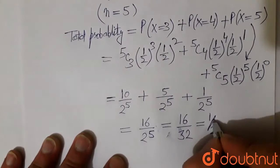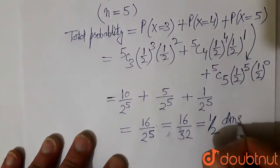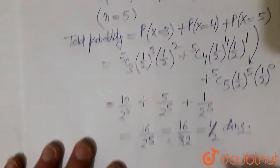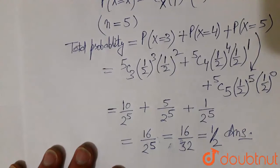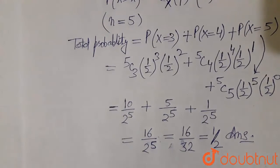16 divided by 2 raised to power 5 is 32, so this becomes 1 by 2. So the probability of getting at least 3 heads is 1 by 2. This is our final answer, thank you.